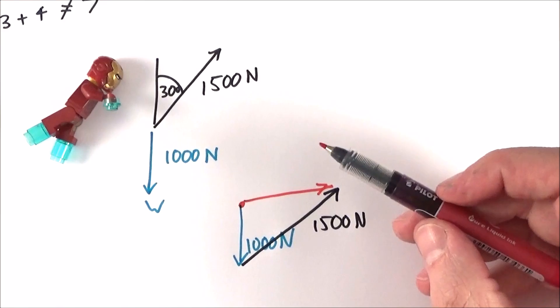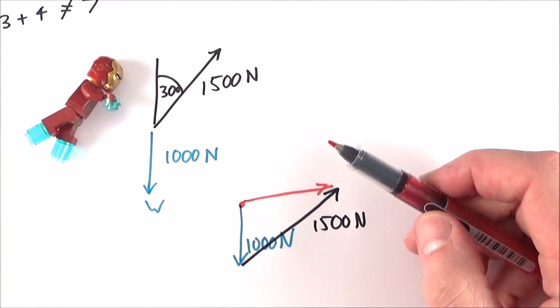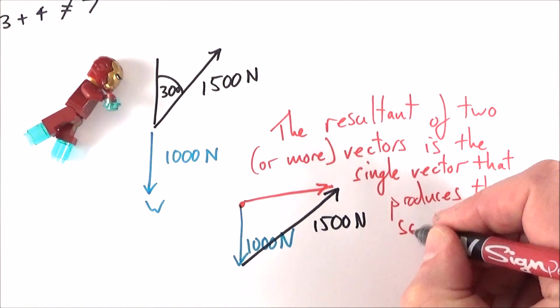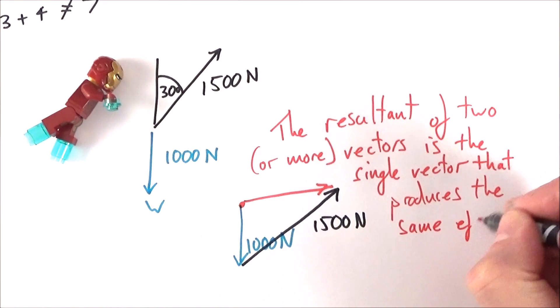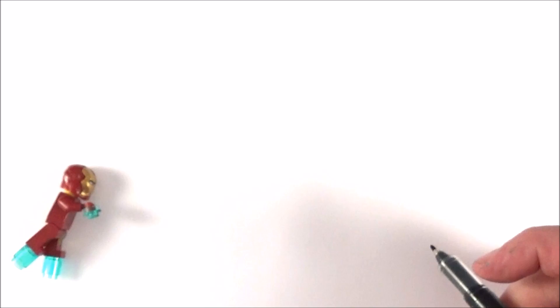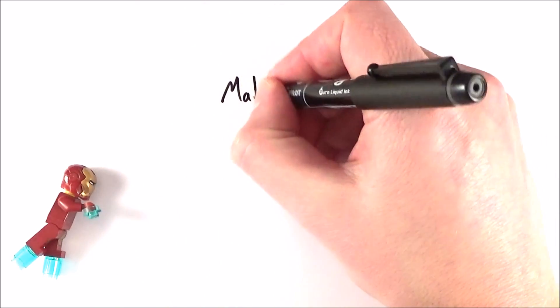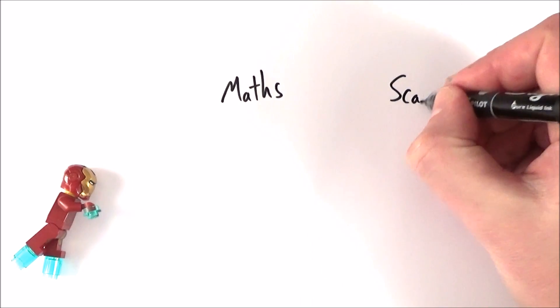So the resultant of two vectors is a single vector that produces the same effect. There are really two ways that we can solve vectors: we can do it by using mathematics or we can do it by using scale drawing.